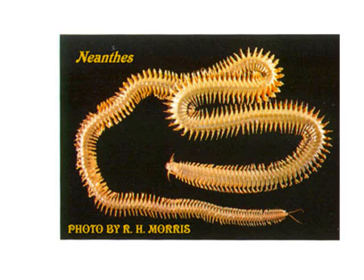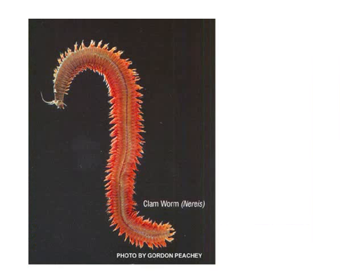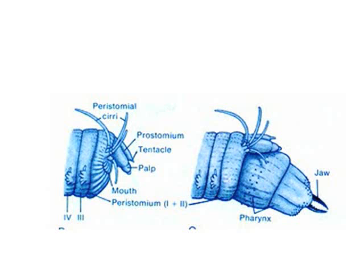This is the worm you looked at in the lab last week that we used as a representative polychaete. You may also see it referred to as Nereis, which is the old name. You also saw a cross-section of this — notice the parapodia on the body. These worms are predators; they have a reversible pharynx equipped with a jaw which they can extend when feeding on other small invertebrates encountered on the surface of the sediment.